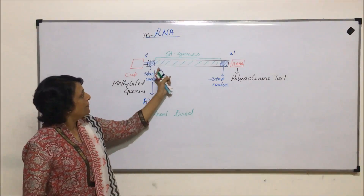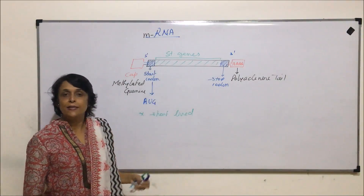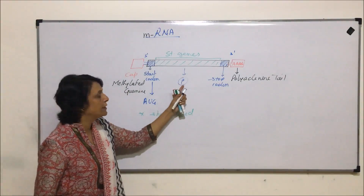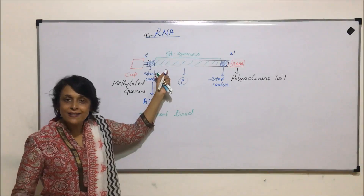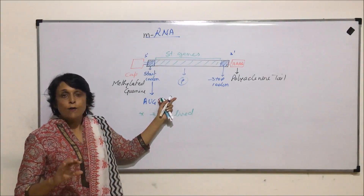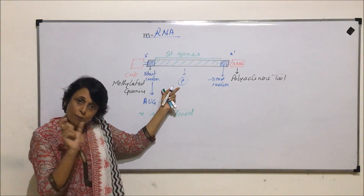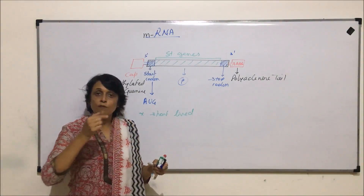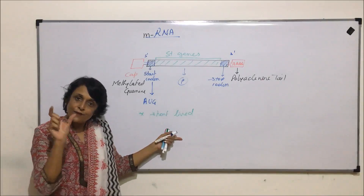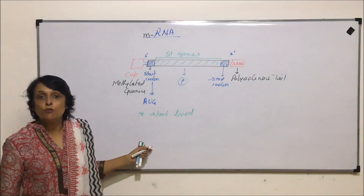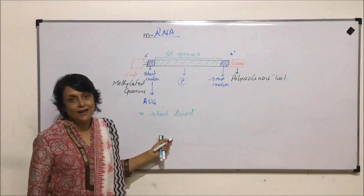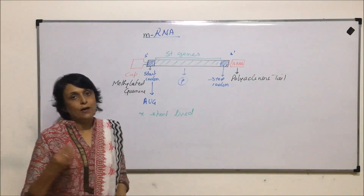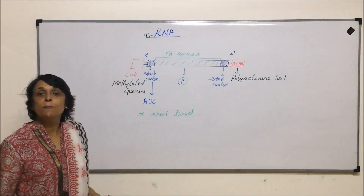An interesting point: if we need 100 molecules of a particular protein, we don't use the same mRNA 100 times. Instead, the same mRNA is synthesized 100 times — 100 separate mRNA molecules are made, each one translates the information into a protein, and after helping in formation of that protein it dissociates. That is why mRNAs are called short-lived RNAs. Their role is to take information from DNA to ribosomes for translation — hence the name messenger RNA.